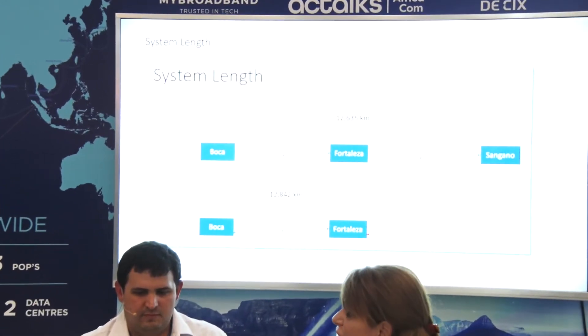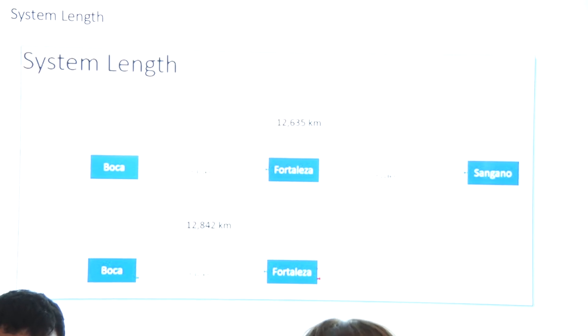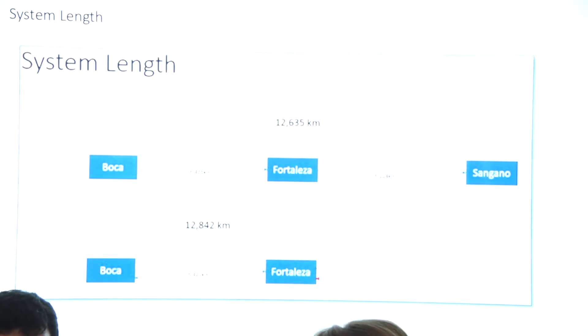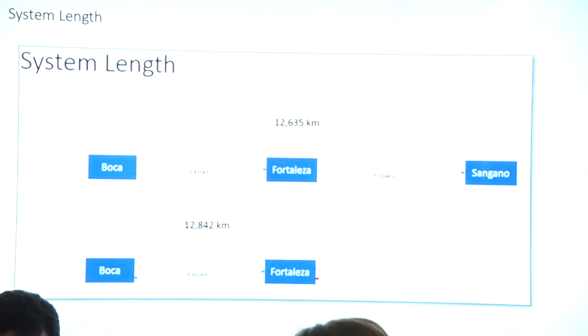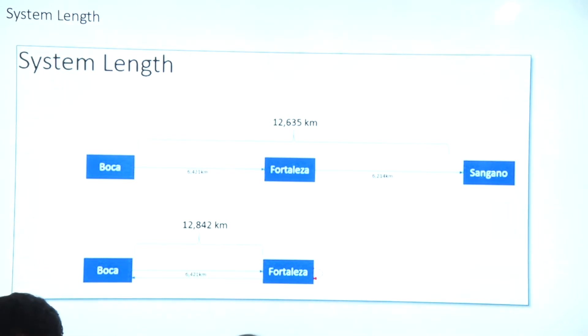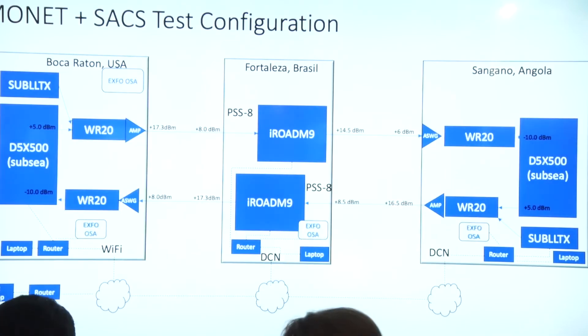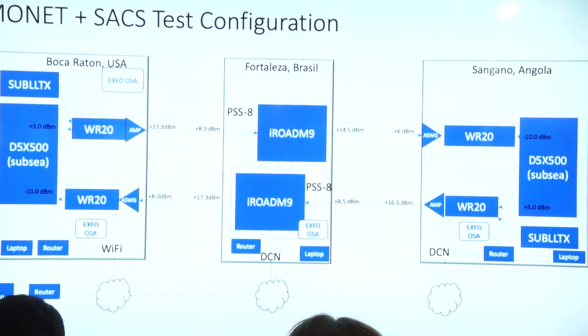Without any regeneration — that's exactly the point we try to highlight. Basically, we have two termination points: one in Angola and one in North America, in Boca Raton. In Fortaleza, we just bypass; we are not terminating. For that specific system, we reach an extremely long distance: 12,600 km in what we call one shot. The system we use specifically is Nokia's 1830 PSS family gear.